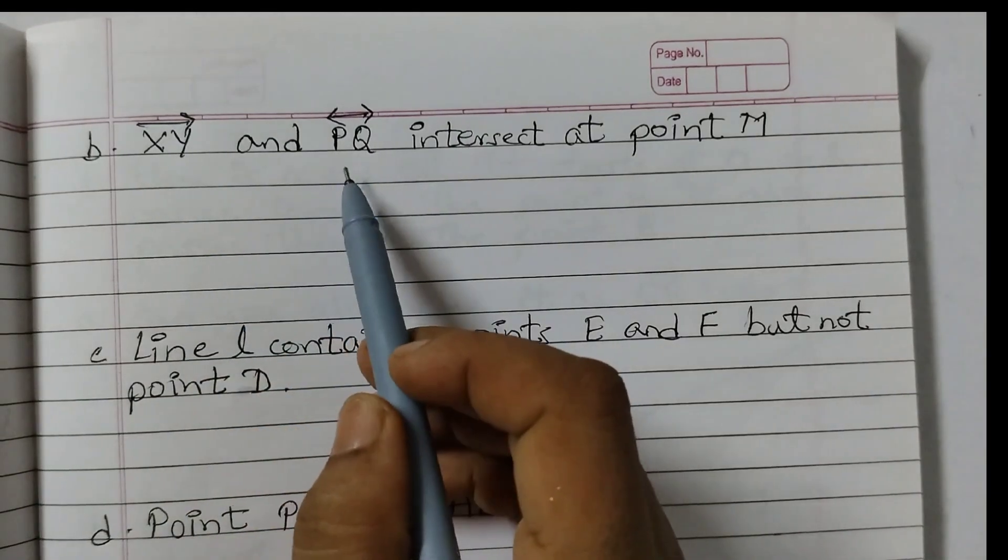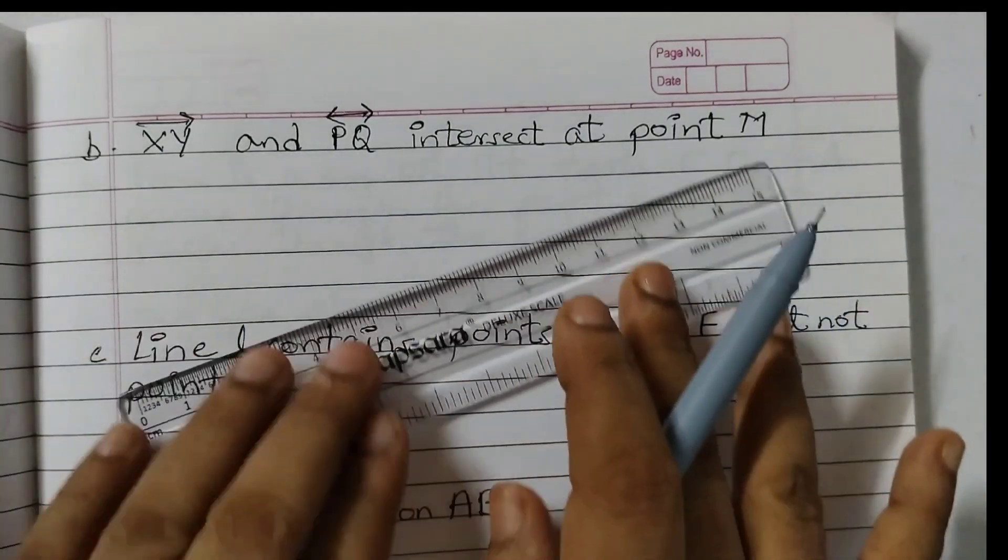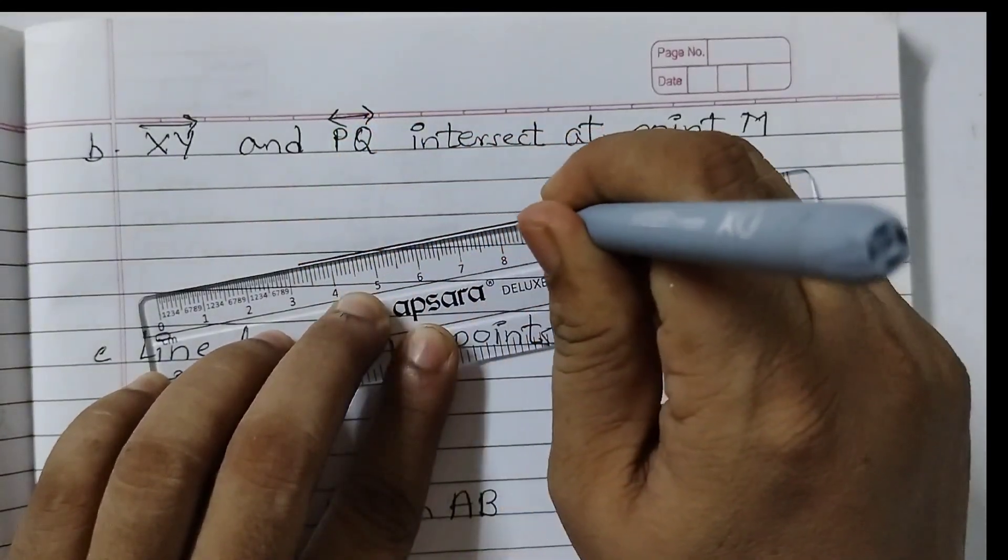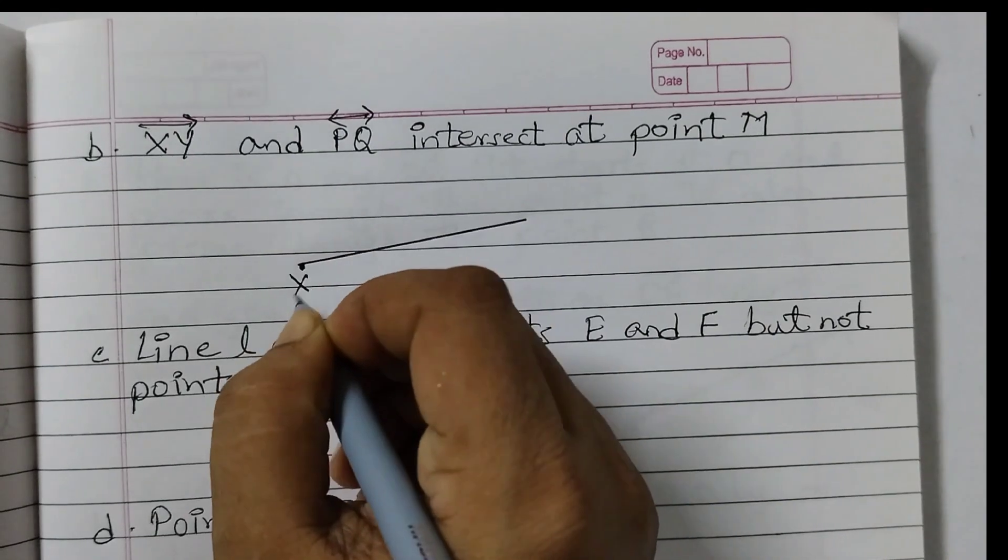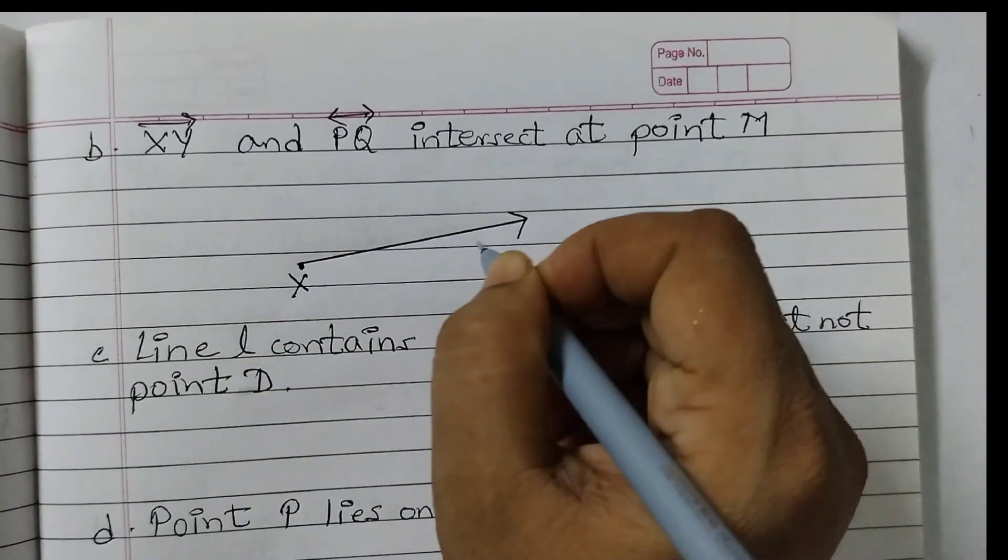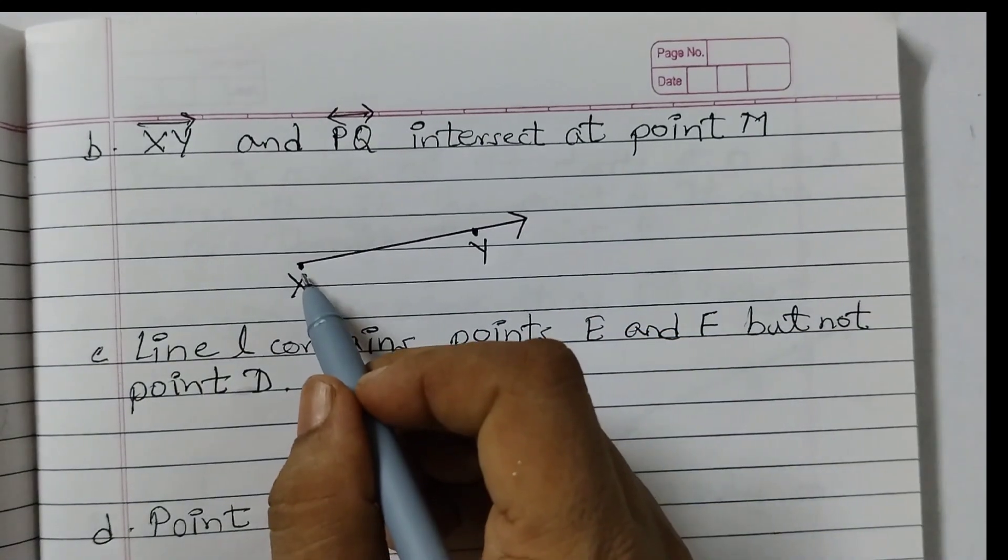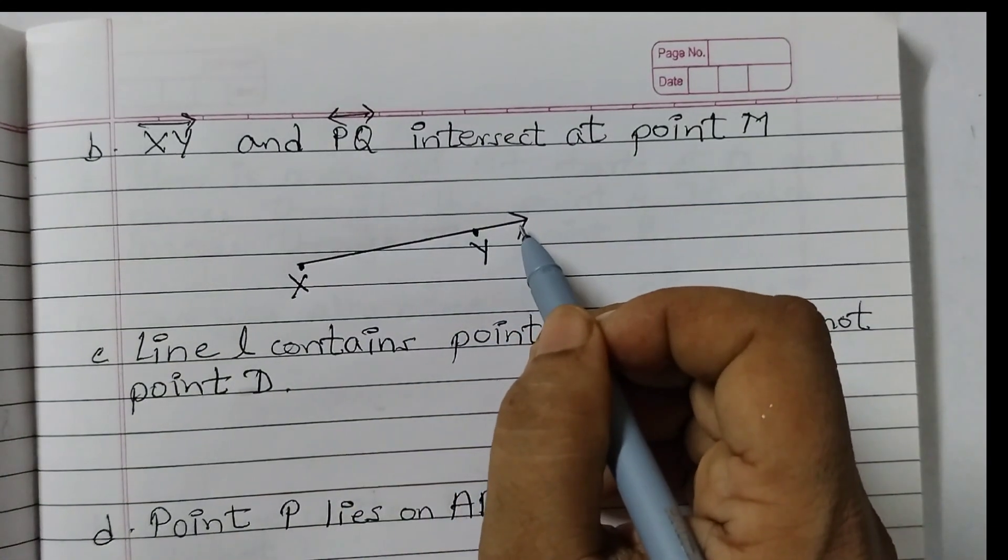Next one, Ray XY and line PQ intersect at point M. So first we will draw Ray XY. This is the starting point, say X and here you put a point as Y. Now this is a Ray. So this is a starting point. Just put a dot like this and one arrow head on this side.